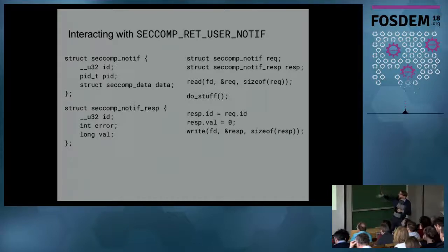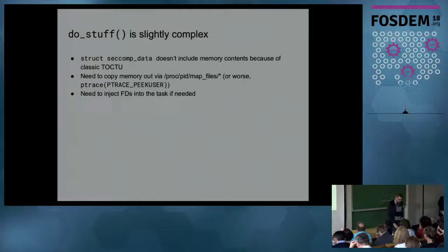So that's what the notification looks like. So basically you read from that, here on the right side, you read from that, then you do whatever the stuff you're going to do is. And then you respond. And you can respond with an error code, and you respond and that's all well and good. As you might imagine, do_stuff is slightly complex. So there's the time of check, time of use issue that I just mentioned. There's also this problem about actually accessing the memory is just itself a complicated or somewhat complicated problem.